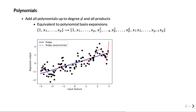We do this for every feature up to xp squared, then we do this for x1 to the third degree, fourth degree, fifth degree, all the way to the dth degree, and then we add all the interactions — elementwise products of x1 times x2, x1 times x3, and so on, all the way up to xp-1 times xp. This creates a quite large feature space depending on how large d is.